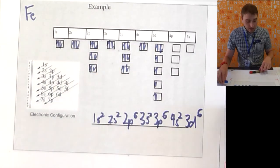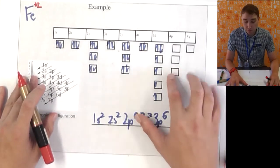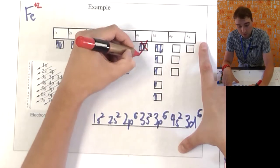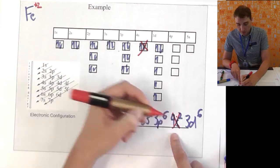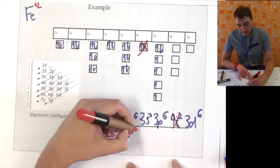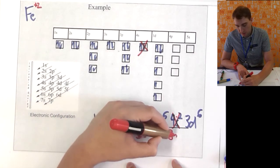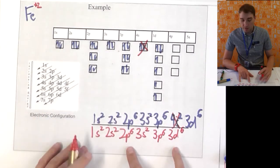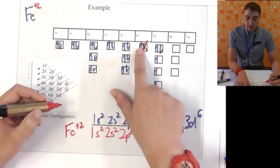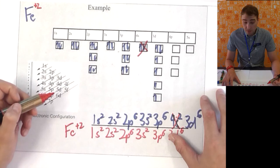Now, the first ion we'll make is the Fe plus 2 ion. We follow the rule that we had before. You get rid of your 4s before anything else. So, we're going to get rid of those. So, now I've lost those two electrons there. I've got 1s2, 2s2, 2p6, 3s2, 3p6, 3d6. That's my electron configuration of the Fe plus 2 ion.